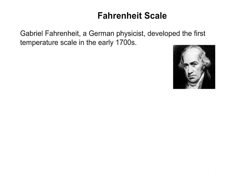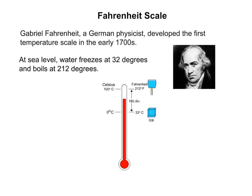Gabriel Fahrenheit, a German physicist, developed the first temperature scale in the early 1700s. At sea level, water freezes at 32 degrees and boils at 212 degrees.